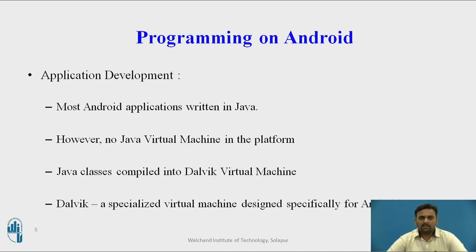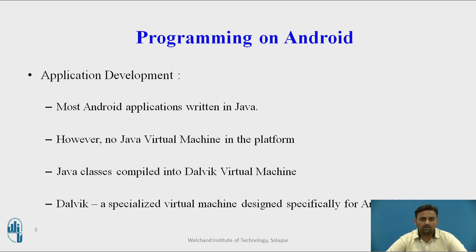While programming in Android, most Android applications are written in Java. First of all, they were written in C and C++, but after some time, they found certain limitations during programming using C and C++ language. That is why Java was introduced. And there is no Java Virtual Machine in this platform — there is one special virtual machine introduced, called the Dalvik Virtual Machine, which compiles these Java classes. This virtual machine is specifically designed for Android applications — the Dalvik Virtual Machine, in short called the DVM.